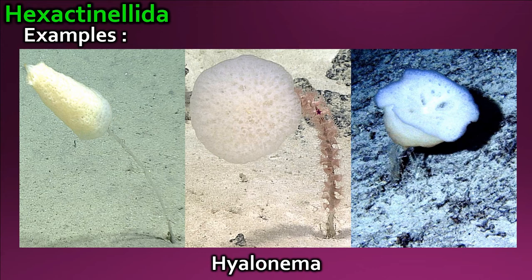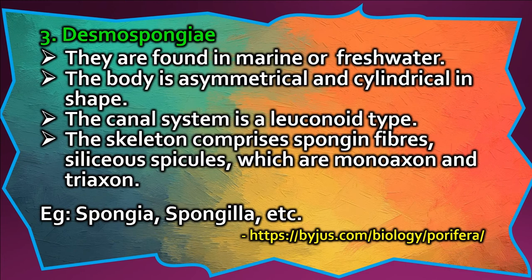Demospongiae are found in marine or fresh water. The body is asymmetrical and cylindrical in shape. The canal system is a leuconoid type. The skeleton comprises spongin fibers and siliceous spicules, which are monoaxon and tetraxon.